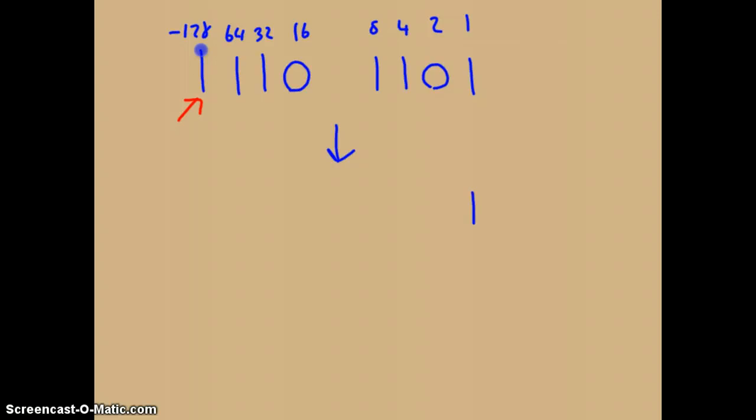Up to and including the first 1, we leave as is. And then the rest, we switch. 0 becomes 1, 1's become 0's.